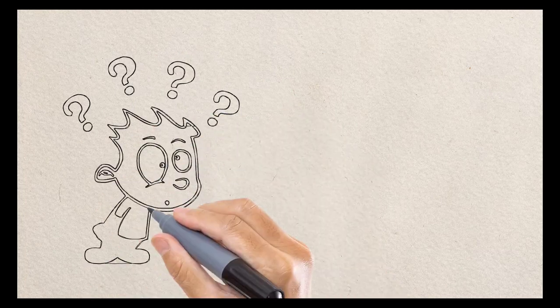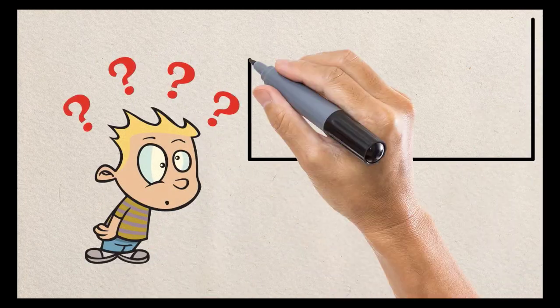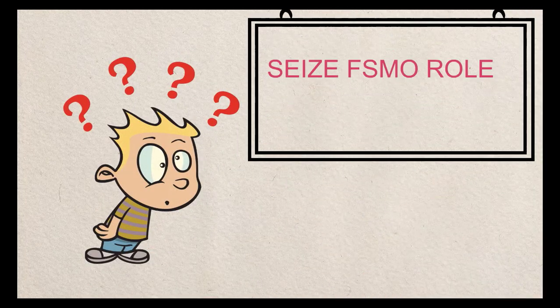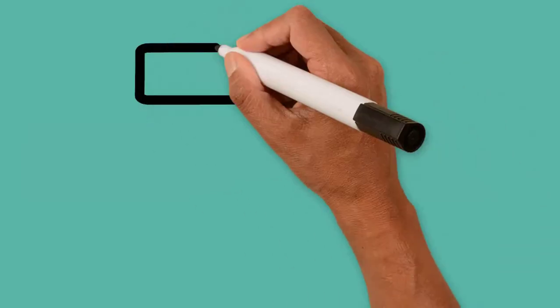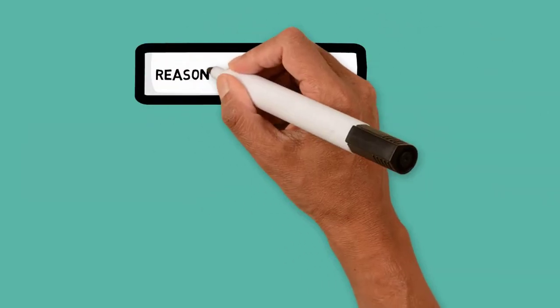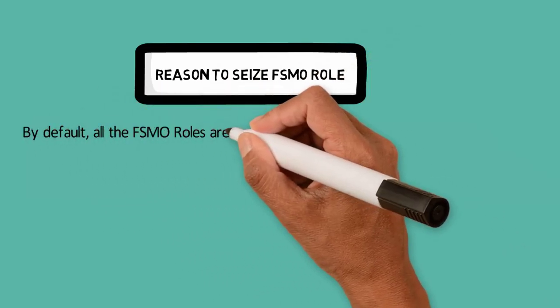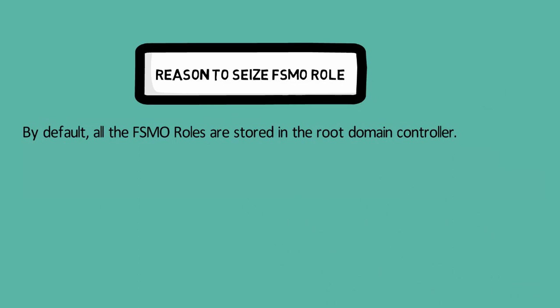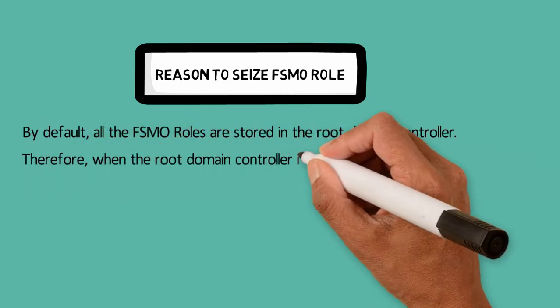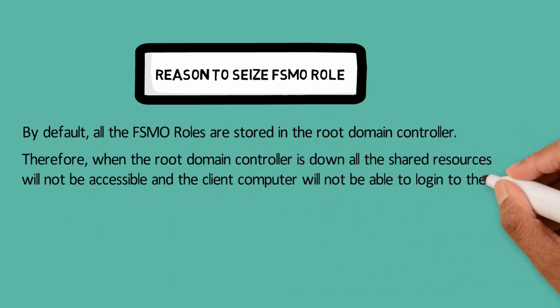Hi guys, welcome to iNetwork365. In this video I will show you how to seize FSMO roles. Before I show you how to seize the FSMO role, let me explain the reason to seize it. By default all these roles are stored in the root domain controller, therefore when the root domain controller is down, all the shared resources will not be accessible and client computers will not be able to log into their system.